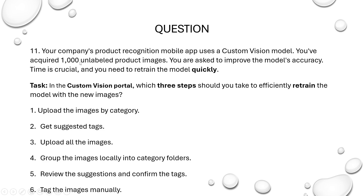We have got a thousand unlabeled new product images. You have to upload these images to the model and retrain it to make it more accurate. So which steps do you follow to do this quickly? The question is: how to retrain a model with new images?